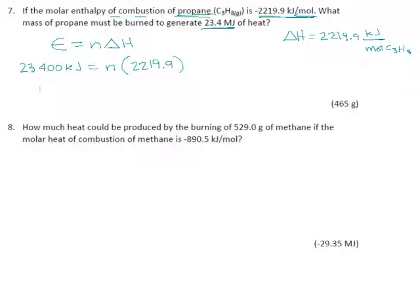Our number of moles is 10.541. Our answer is only going to have three significant digits because of the 23.4 megajoules, so if I carry five digits here, that should be plenty. That's 10.541 moles of propane. They don't want moles of propane, though.